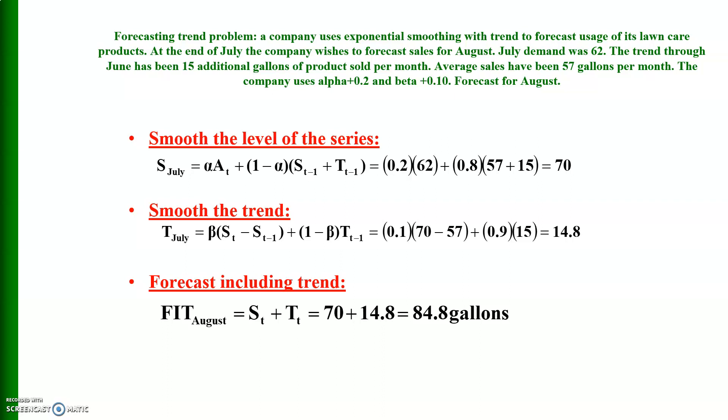The company uses exponential smoothing with trend to forecast usage of its lawn care products. At the end of July, the company wishes to forecast sales for August. July demand was 62, the trend through June has been 15 additional gallons of product sold per month, average sales have been 57 gallons per month. The company uses alpha equals 0.2 and beta equals 0.10. Forecast for August is equal to 84.8 gallons.